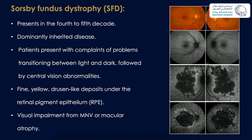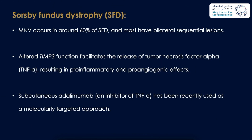Sorsby fundus dystrophy presents in the fourth to fifth decade and is dominantly inherited. Patients present with problems transitioning between light and dark, followed by central vision abnormalities. The fundus shows fine yellow drusen-like deposits under the RPE, which can progress to bilateral macular atrophy. Visual impairment is usually from macular neovascularization or macular atrophy; MNV occurs in around 60% of Sorsby fundus dystrophy cases with mostly bilateral sequential lesions. Altered TIMP3 function promotes release of TNF-alpha, and subcutaneous adalimumab has been used as a molecularly targeted approach.